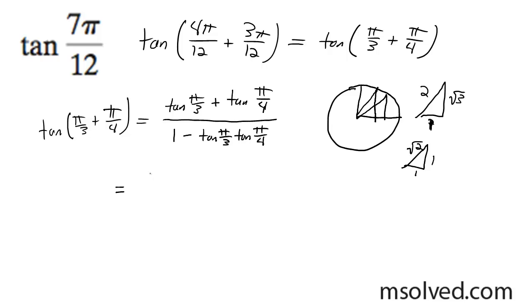Tangent of π/3 is going to be equal to root 3 over 1, so simply just root 3. Plus tangent of π/4 is 1 over 1, so just 1 in this case.